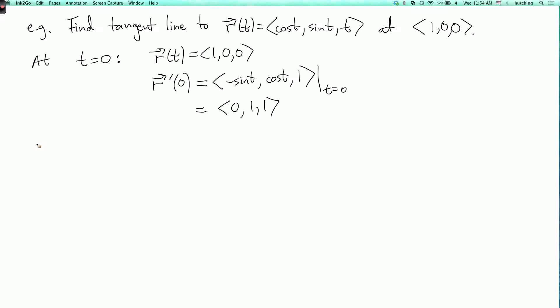And so the tangent line is L of s equals the point that we start on, which is one, zero, zero, plus s times the tangent vector, which is zero, one, one.